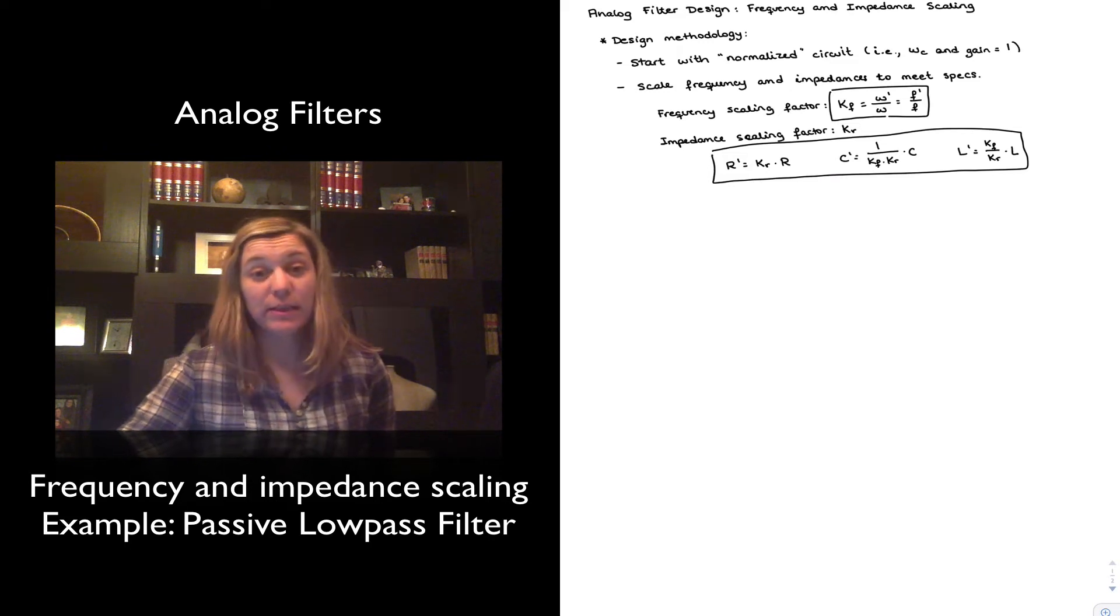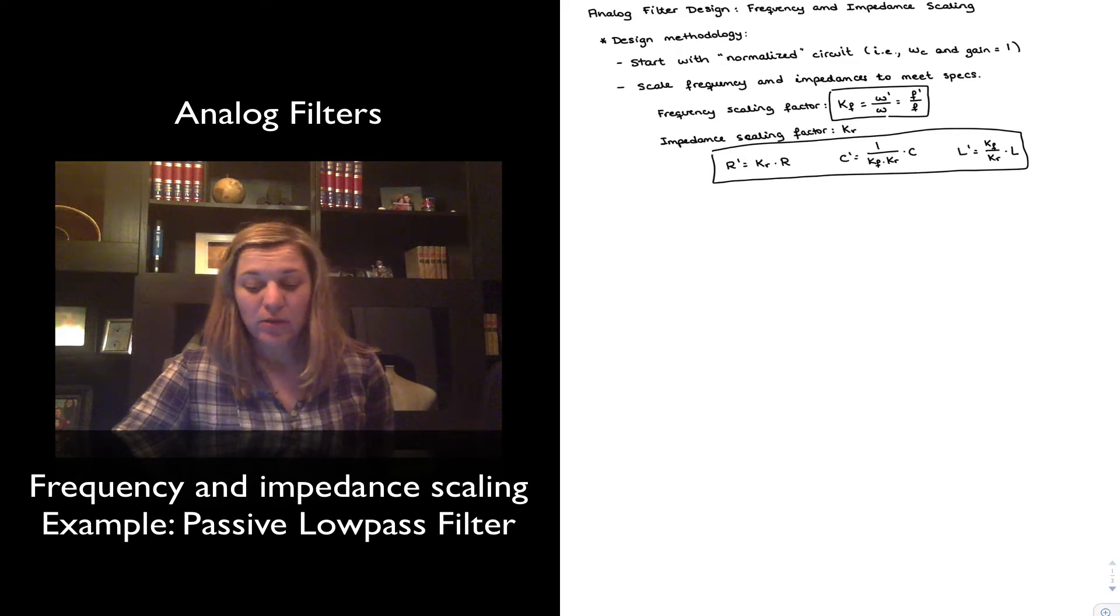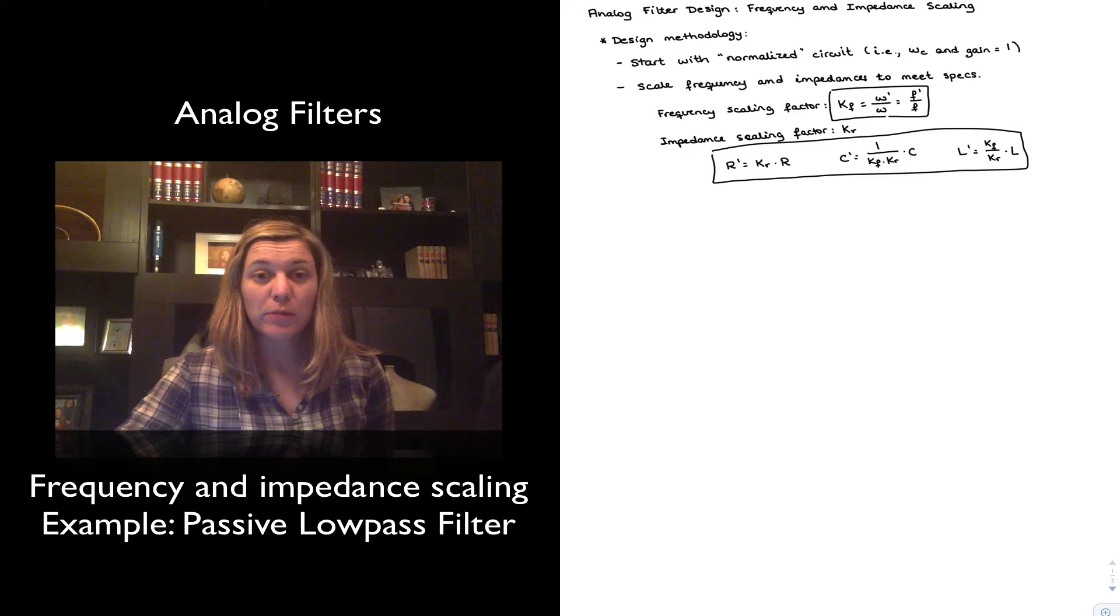And then there is an impedance scaling factor that we need to calculate, K sub r. And K sub r is going to be used to modify the impedances of the different elements in the circuit in order to meet our desired specs. In a way that once we calculate our impedance scaling factor, all our resistors are going to be modified by multiplying the resistance in the normalized circuit times the impedance scaling factor, Kr. That will give us the new resistance value, R prime.